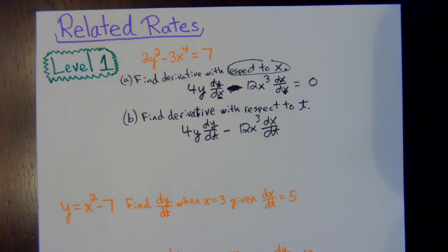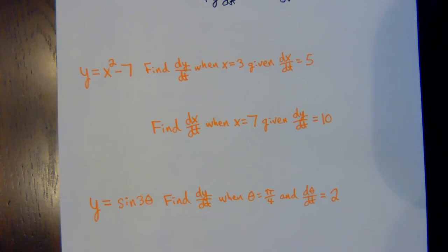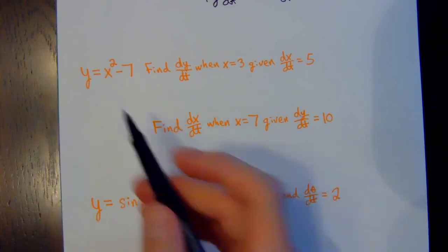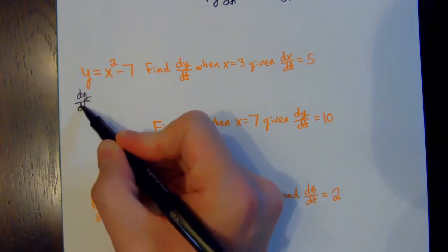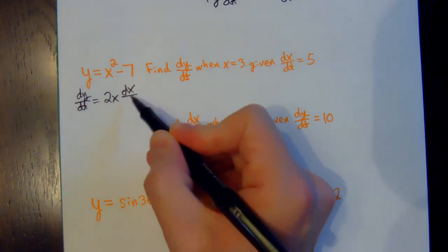This is just Calc 1 — you can do even more with this in Calculus 3 in college, multi-variable calculus, because you can have more things changing. But let's practice some level one problems. Level one: they straight up give us everything we need and we just practice taking the derivative with respect to time, then plugging in some info. So I'm going to take the derivative of everything with respect to time — they give us this info — so I get dy/dt equals 2x, and tagging on dx/dt. The derivative of 7 is 0.